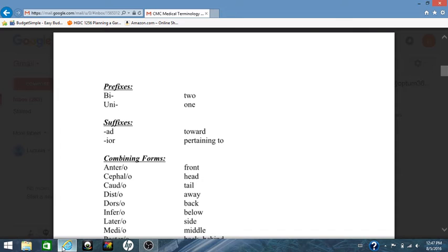Suffixes, you only have two in this chapter. Suffixes come at the end and modify the meaning of the word. Your suffix for this chapter, unit three, there's only two. A-D means toward. I-O-R means pertaining to.